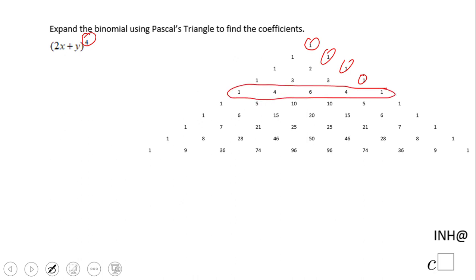So let's see what we get. We get this one right, which means what? One times, now we have to be careful here, 2x to the fourth power, the whole quantity, plus the next number is 4.